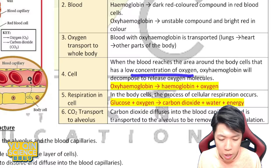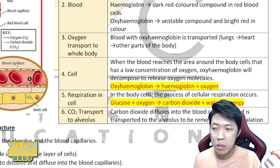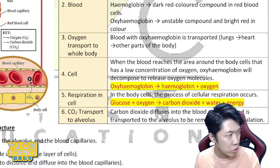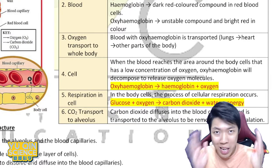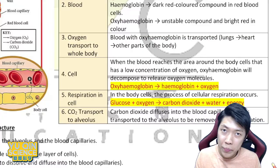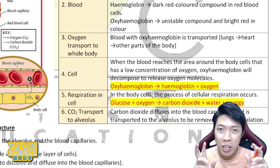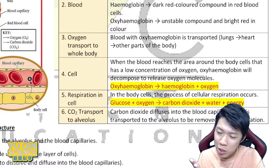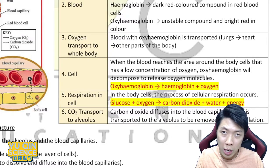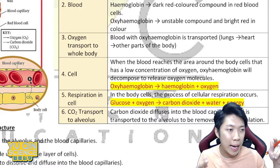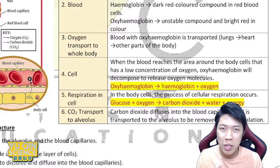Step four: the blood reaches the body cells, which have low concentration of oxygen, so oxy-hemoglobin will decompose. The body cell is lacking oxygen while the red blood cell is full of oxygen, so diffusion happens again — this time oxygen diffuses into the body cells. At the same time, carbon dioxide from the cell diffuses into the red blood cell, which then carries the CO2 back to the lungs — it's always an exchange.